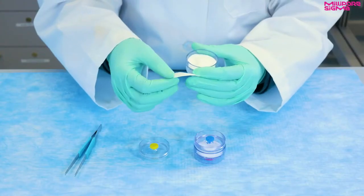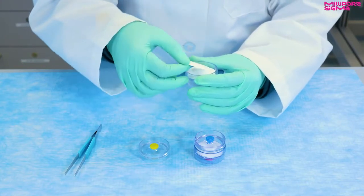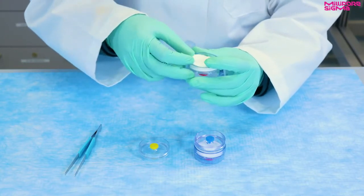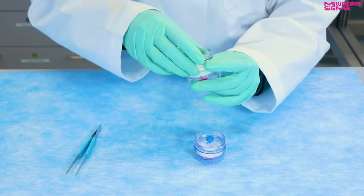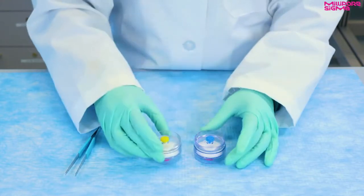The two filters are placed on top of the support pad inside the monitoring cassettes. The sample is collected on the top membrane filter and the bottom membrane filter is used as the tare weight in gravimetric analysis.